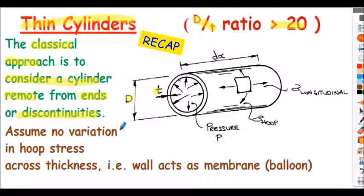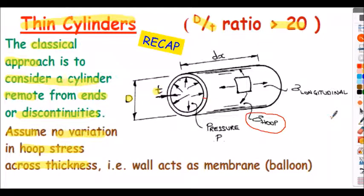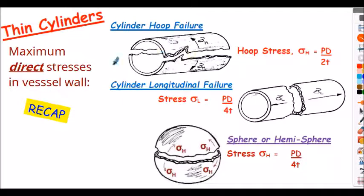We also assume with this theory that there's no variation of the hoop stress across the thickness of the vessel wall — the hoop stress is constant across the thickness. It's not quite right but it's good enough for this type of cylinder. In other words, the wall of the cylinder acts like a membrane, like a balloon reacting internal pressure by pure tension. That's how a thin cylinder of aluminium alloy or steel reacts internal pressure — it's in pure tension, a hoop stress, and of course has a longitudinal stress.